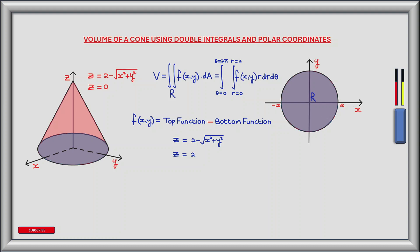Starting with z equals 2 minus the square root of x squared plus y squared: substituting x equals 0 and y equals 0 gives z equals 2. Our other function is z equals 0, a constant. So z equals 2 minus the square root of x squared plus y squared is the top function. Subtracting the bottom function (0) from the top gives us 2 minus the square root of x squared plus y squared as the height component.